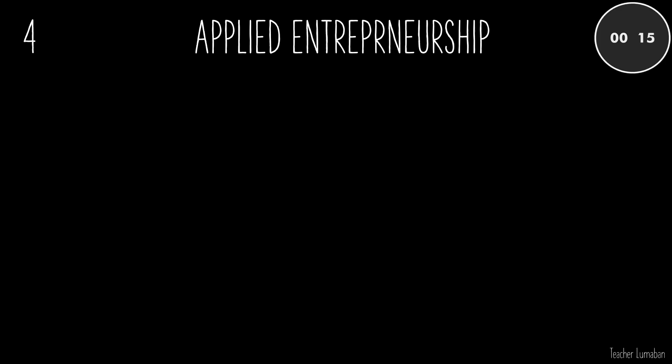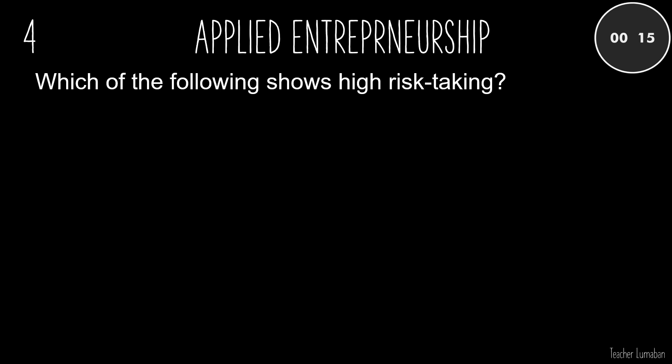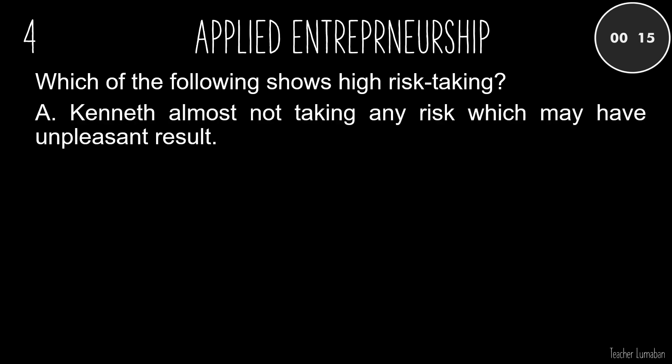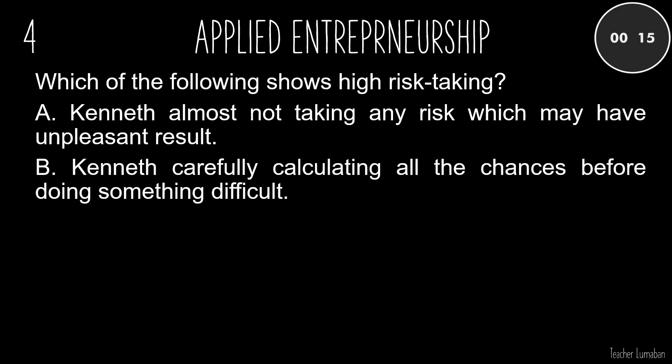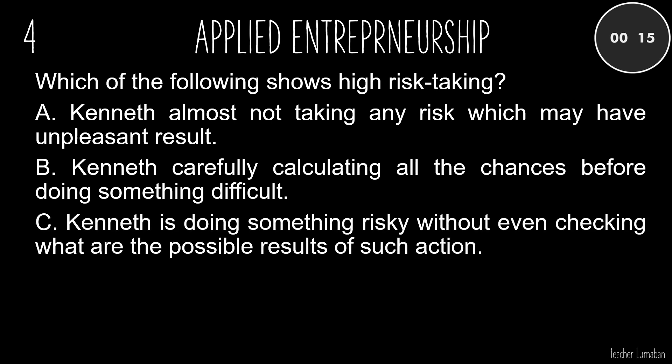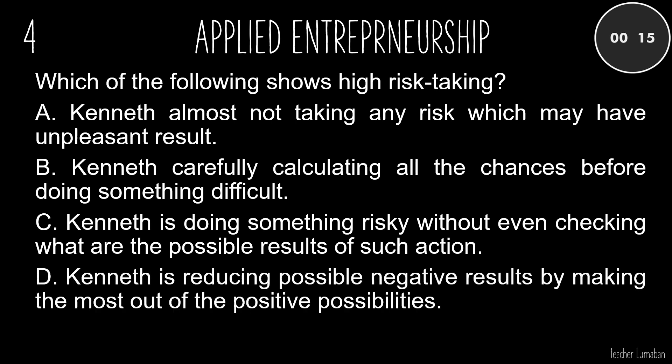Which of the following shows high risk taking? A. Kenneth almost not taking any risk which may have unpleasant result. B. Kenneth carefully calculating all the chances before doing something difficult. C. Kenneth is doing something risky without even checking what are the possible results of such action. D. Kenneth is reducing possible negative results by making the most out of the positive possibilities.